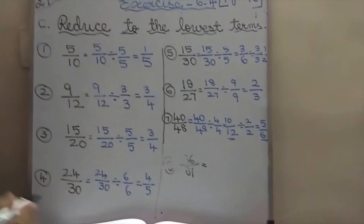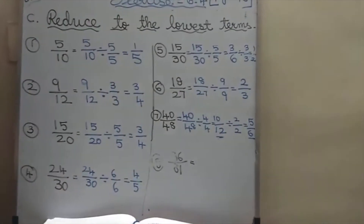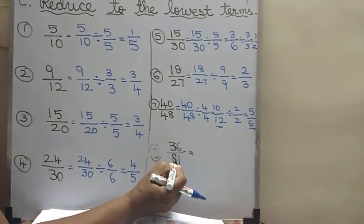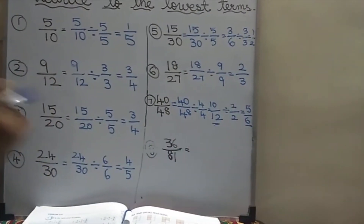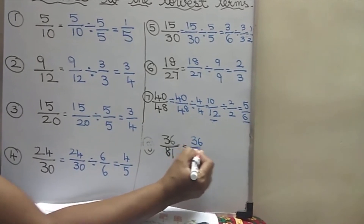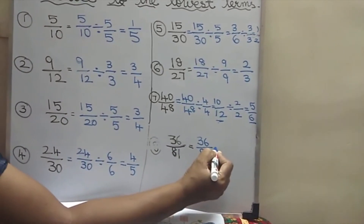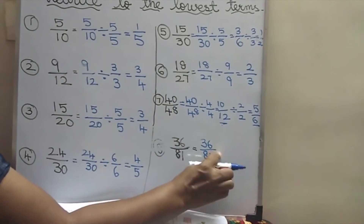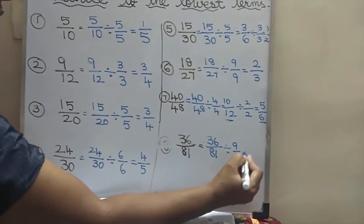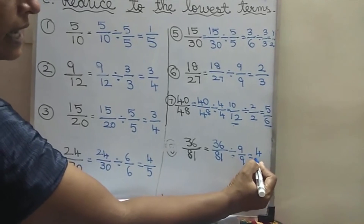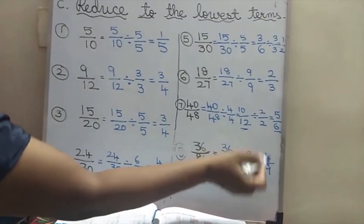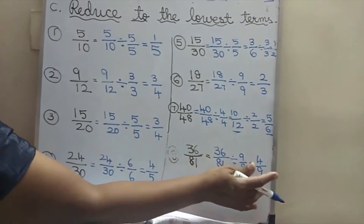And then 36 by 81 — this will go in 9 table: 36 by 81 divided by 9. 9 4s are 36 and 9 9s are 81. It cannot be divided in the same table, so this is the lowest term.